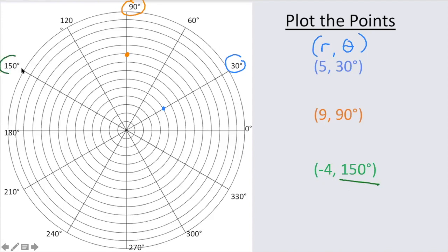Well, let's find 150 degrees. 150 degrees is right here, but negative means you don't go from the origin towards that direction angle. You go in the opposite direction, so I'm actually going this way.